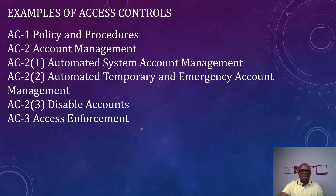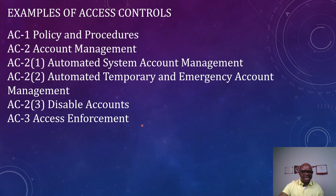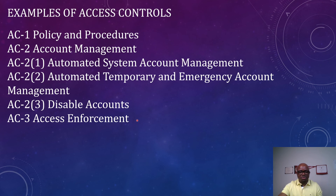AC-3 is Access Enforcement. This means that whatever access you have granted to your users or employees, that access must be enforced. If an individual account has been given access only to a particular system, that access must be enforced — the person is not permitted to access another system. If they are not permitted to see or share certain folders, they must not be able to do that. That is what AC-3 Access Enforcement is talking about.